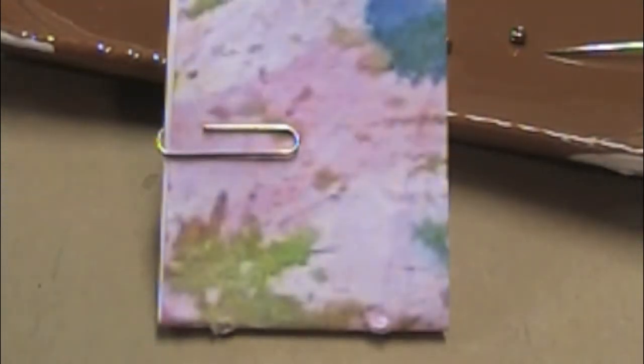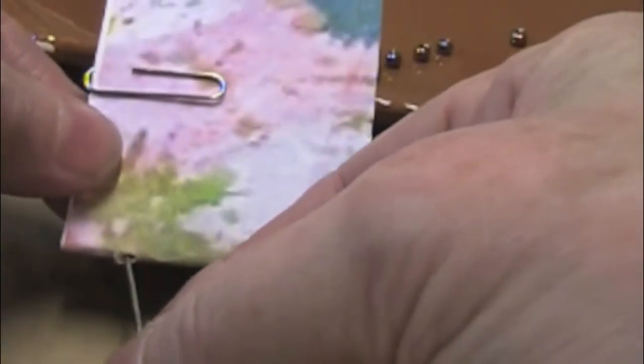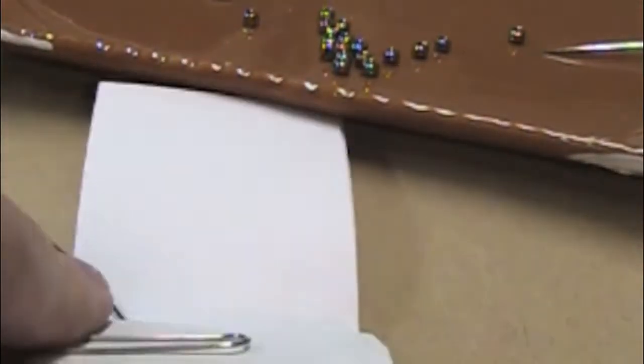For this variation, we're going to make an inside-out tacket stitch. We've been sewing into the signature so that the tacketed area appears on the outside spine, but this time we're going to sew out of the signature like so, and leave tying space at the end.